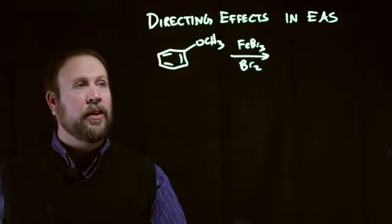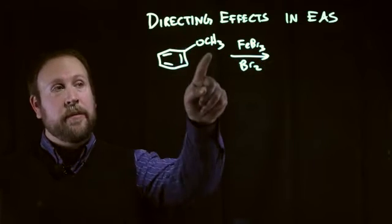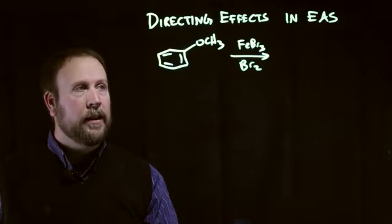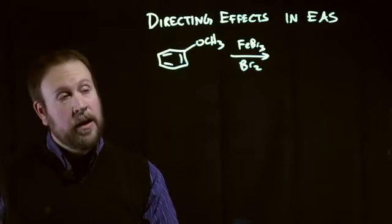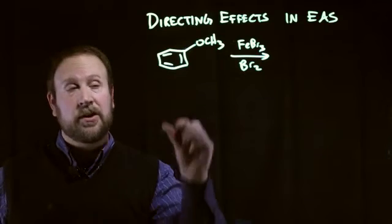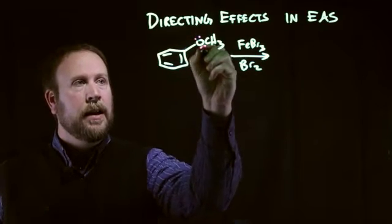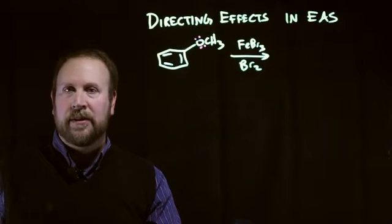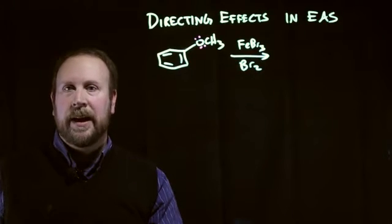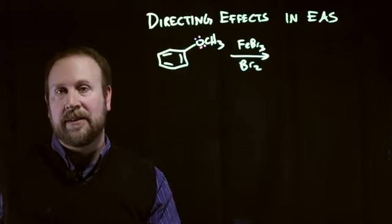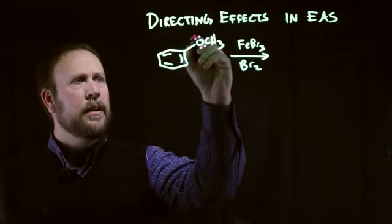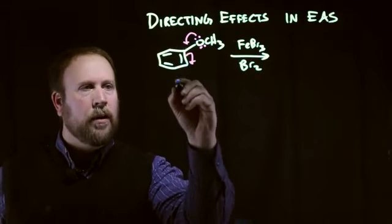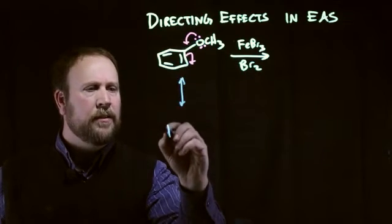Let's look at an example of an electron-donating group. In this case, we have a methoxy group attached to our aromatic system, and we'll see what happens in an EAS reaction where we're brominating our aromatic system. One of the important things we want to do is look at the electronics of our aromatic system. We know that this is an electron-donating group that's activating our aromatic system, making it more reactive. Remember that benzene has to act as a nucleophile in this reaction. So let's look at the different resonance structures that we can draw for methoxybenzene, or anisole.